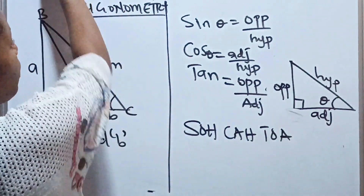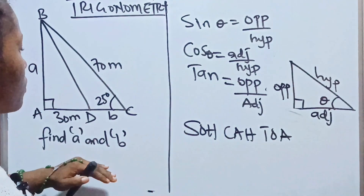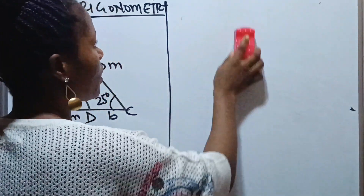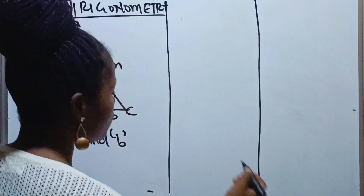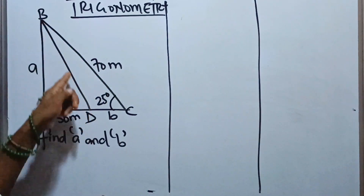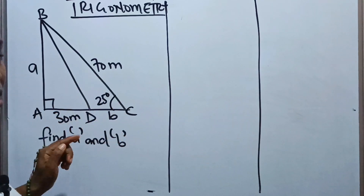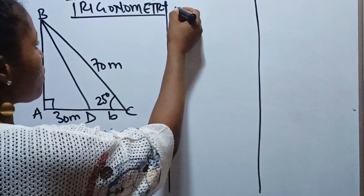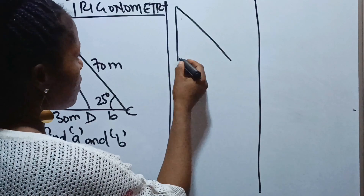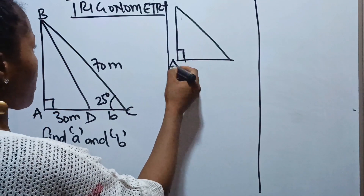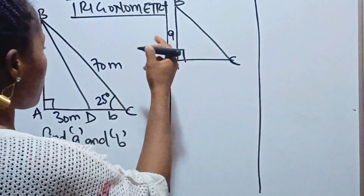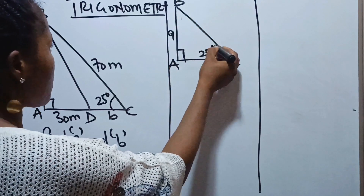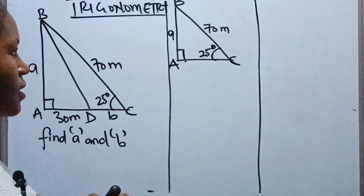This is just an introduction. We are going to use this knowledge to solve the problem on the board. To find a, I'm going to neglect the extra line and concentrate on triangle ABC. Drawing triangle ABC: this is A, this is B, this is C. The angle at A is 25 degrees and the given side is 17 meters.